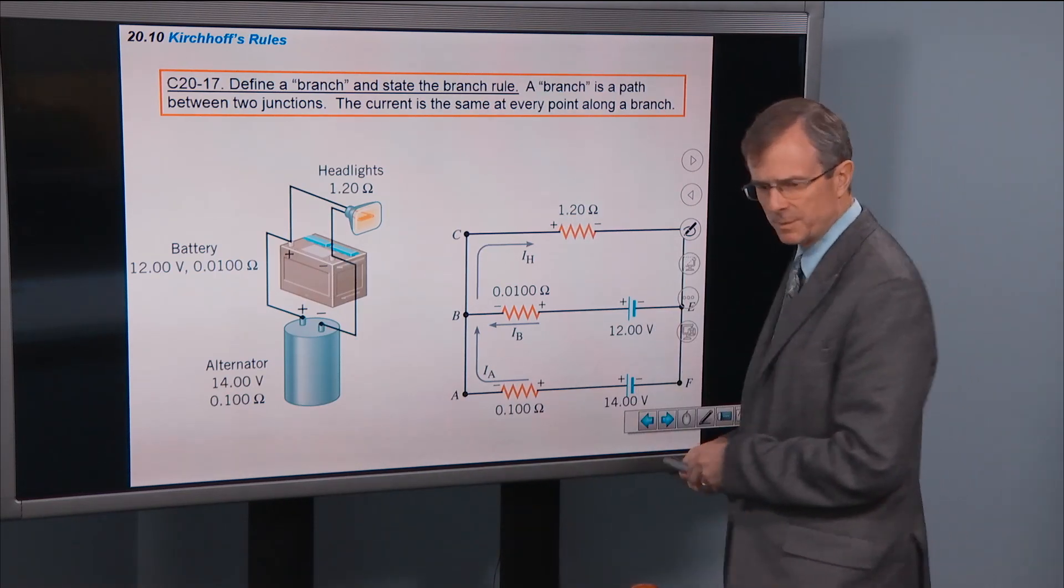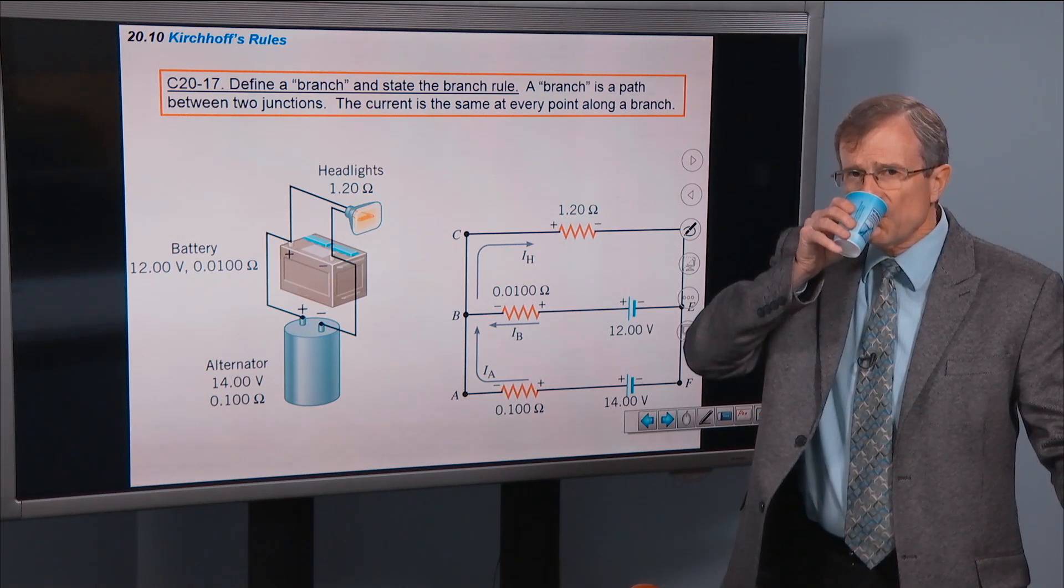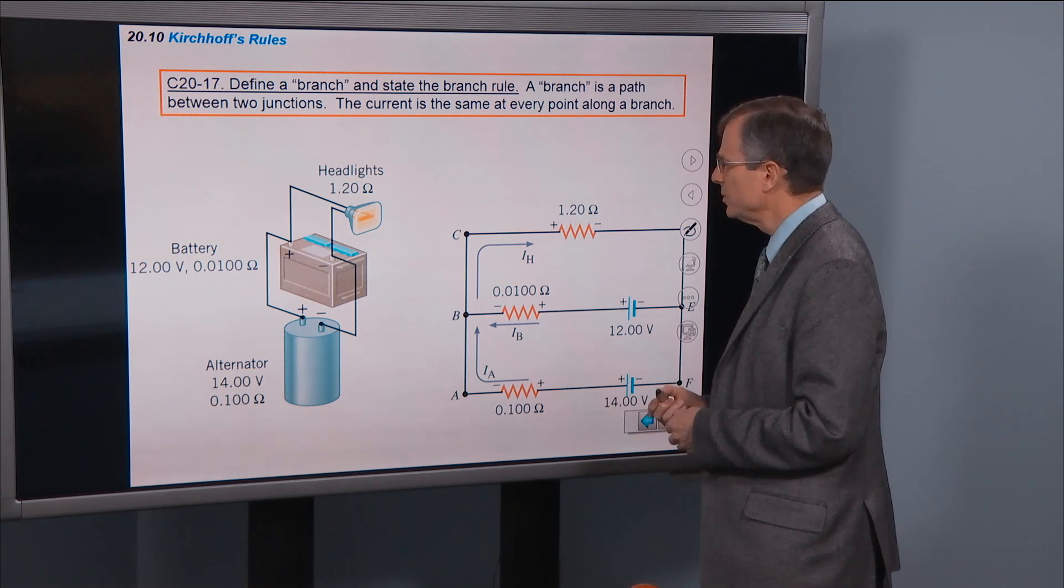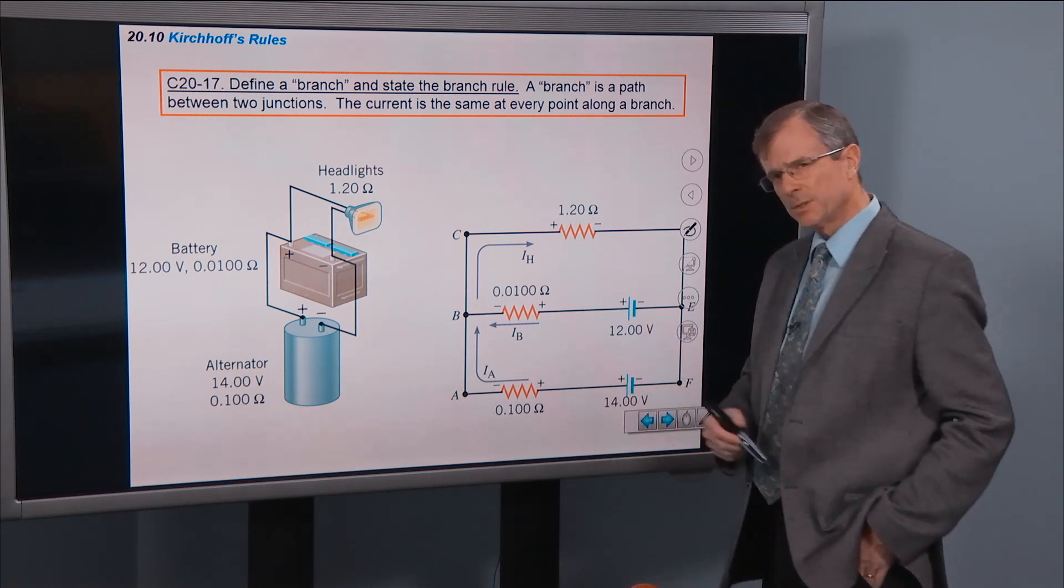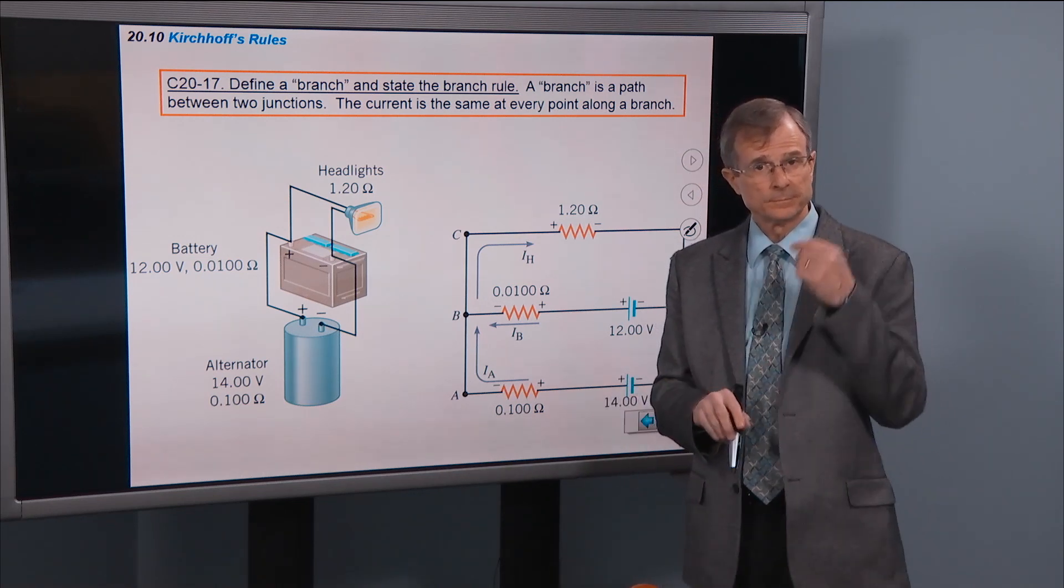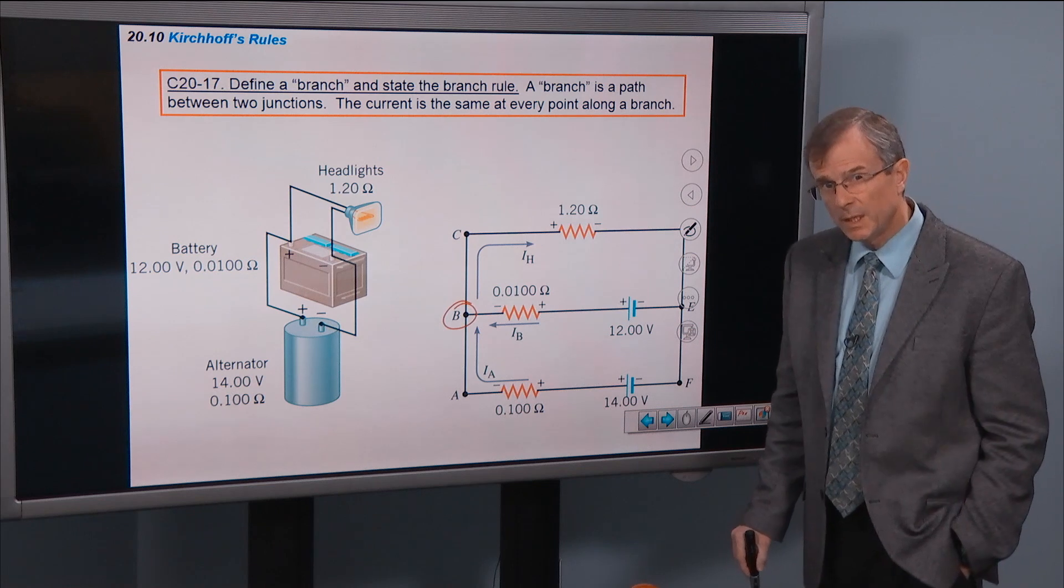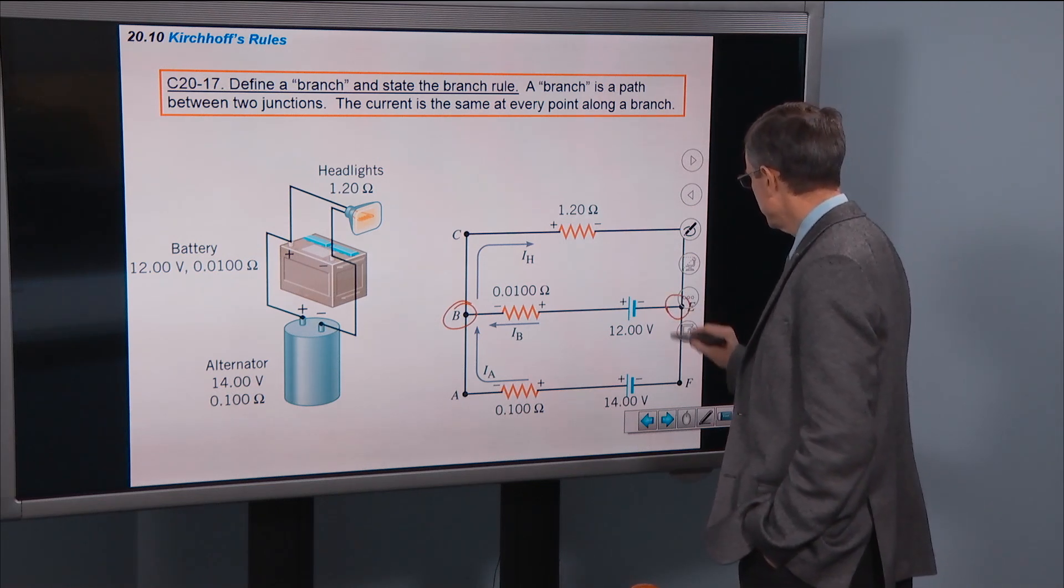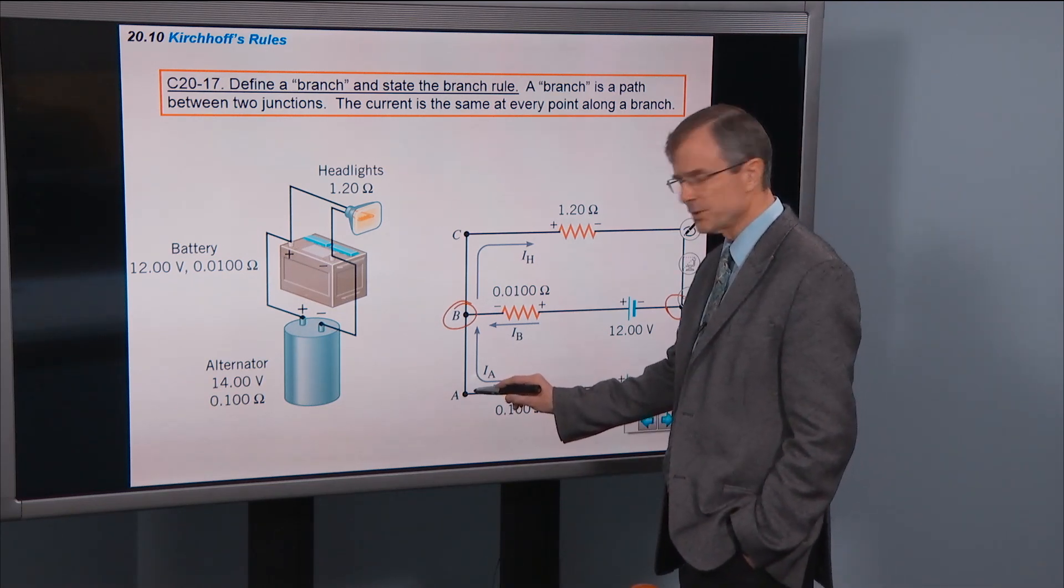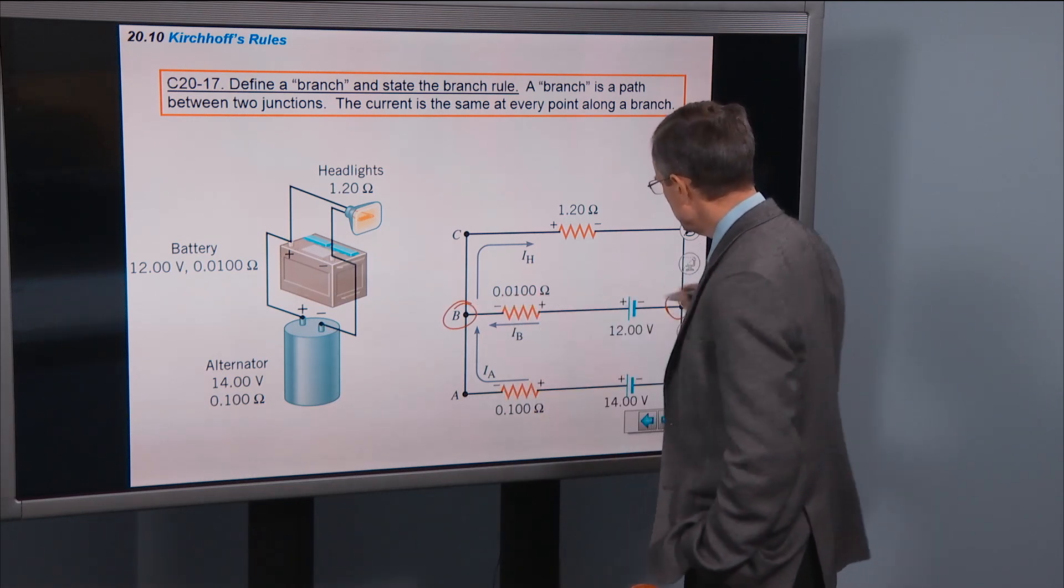Define a branch. We've talked about these two. What's a branch of the circuit? A branch is a path between two junctions. What's a junction? Let's remind ourselves of a junction. A junction is where how many or more wires come together? Three. So this would be an example of a junction. And a branch is a path between two junctions. There's another junction over here and those are the only two junctions in this circuit. What about this one here? Is that a junction? No, only two wires. Has to be three or more. So junctions here at these two points.